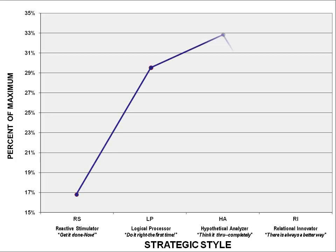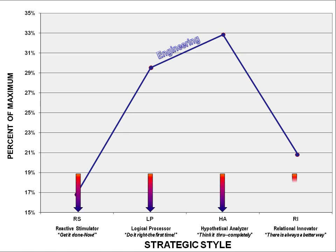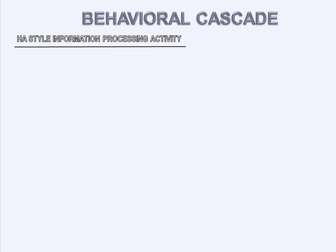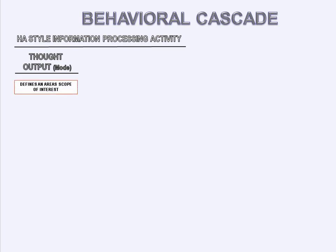And here is what we found. The line here represents the strength of commitment in each of the four basic IOPT categories. Each category represents a unique combination of input and output elections. Let's use the engineer's dominant HA style to show how these categories work. A person's intended output defines the kind of information that is to be sought or accepted. For the HA, the intended output is complete understanding of the issue in question.